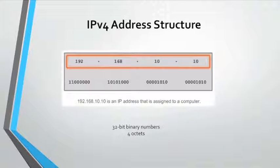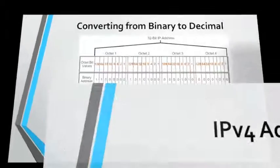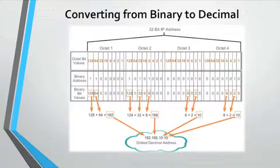IPv4 addresses are structured as 32-bit binary numbers. However, for ease of use by people, binary patterns representing IPv4 addresses are expressed as dotted decimal. This is accomplished by separating each byte of the 32-bit binary pattern, called an octet, with a dot. It is called an octet because each decimal number represents 1 byte or 8 bits. To represent IPv4 addresses, it is only necessary to examine the process of converting 8-bit binary to decimal values of 0 to 255 for each octet in an IPv4 address.